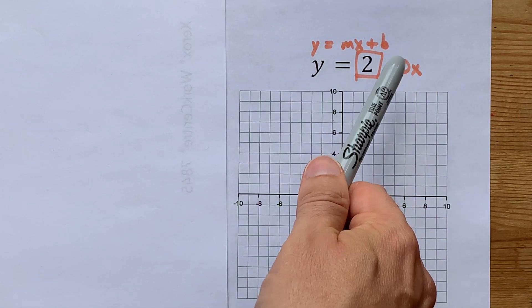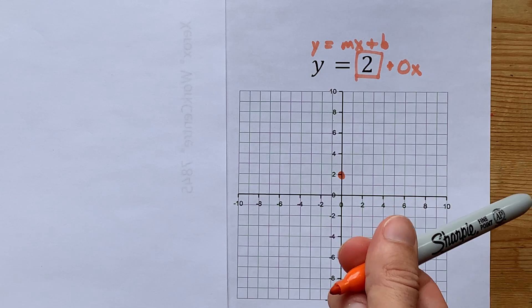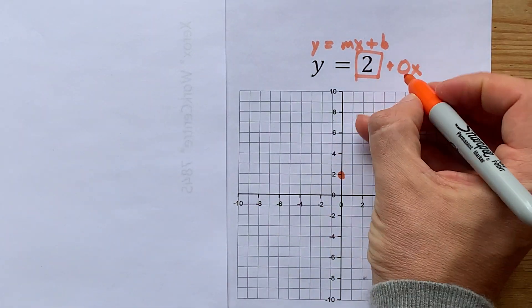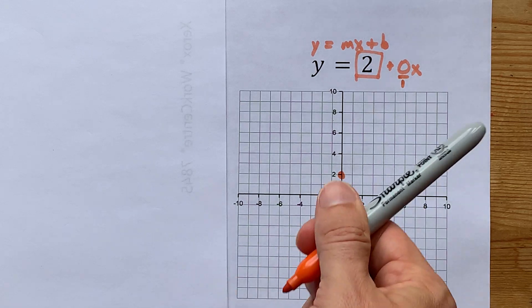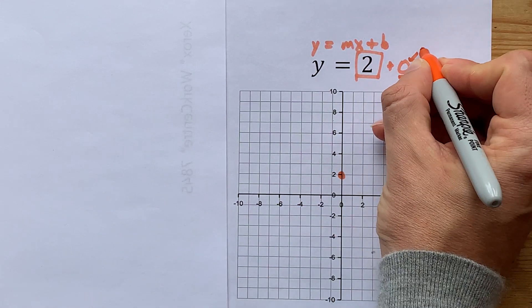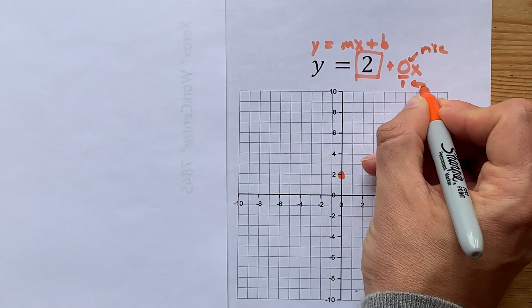And then I'm going to use the slope to generate more points. Now 0 as a fraction can be written 0 over 1. The reason I do that is to show you that there is still a rise and a run here.